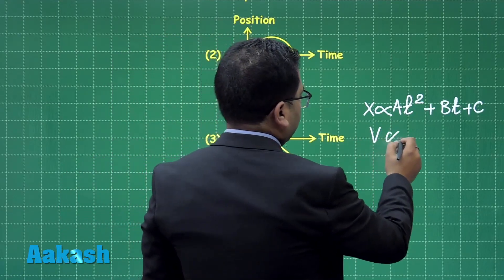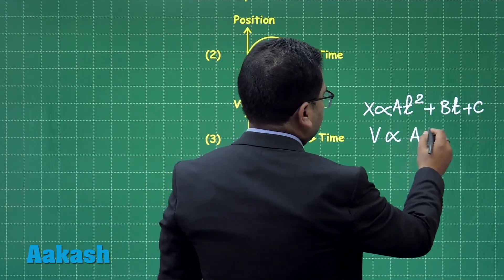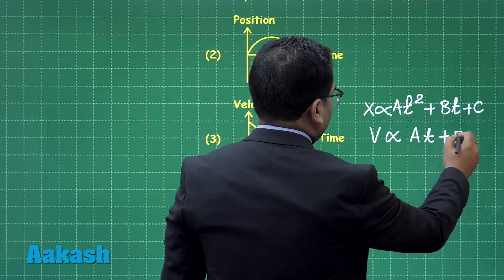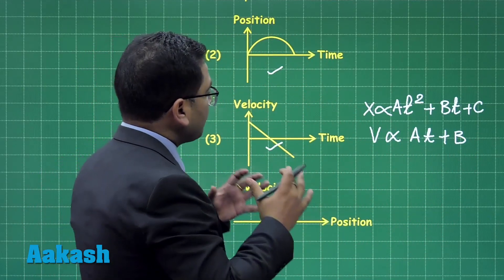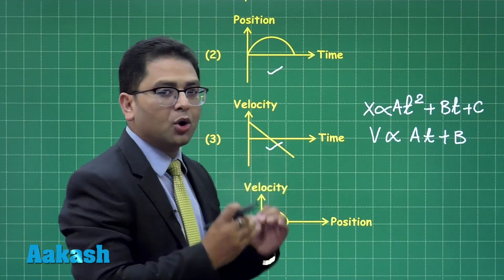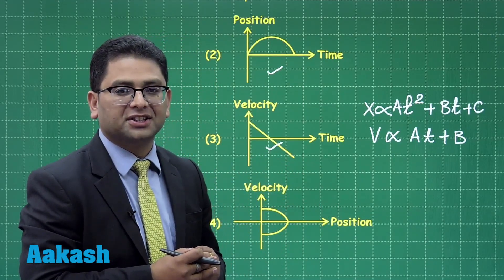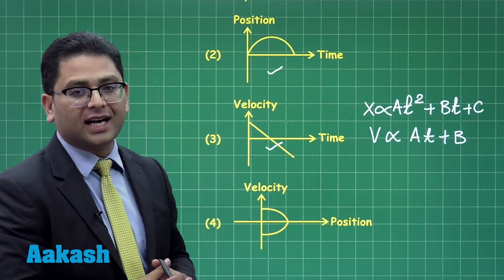And in that case, the velocity would be directly proportional to a*t plus b. Now one thing what I can see is that this and this is representing a similar motion with a constant acceleration. So the first breakthrough has been done.